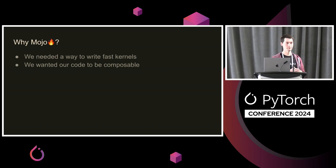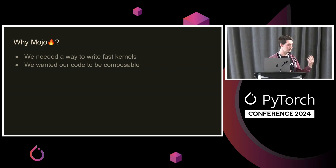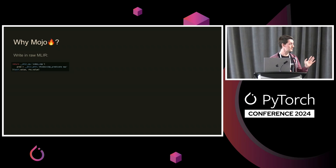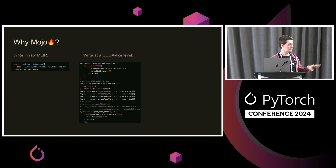But we didn't want to stop there. We didn't want just a pretty assembly language. We wanted our code to be composable so that we can build higher-level abstractions and libraries of quite high-level concepts. This was the second requirement for Mojo, and we successfully achieved it. To show how it looks in practice, I'll show you three ways to implement GPU kernels using Mojo. The first is the ugly version — like MLIR — where you can emit raw MLIR when you want full control, but obviously you don't want to always use this. On top of that, we built an abstraction layer that looks like CUDA.